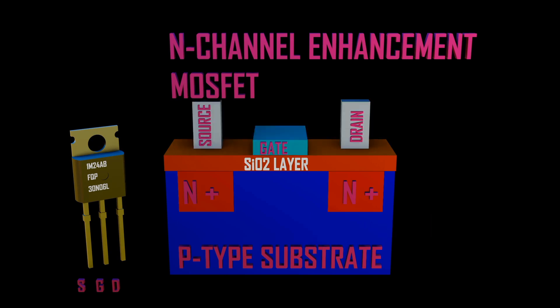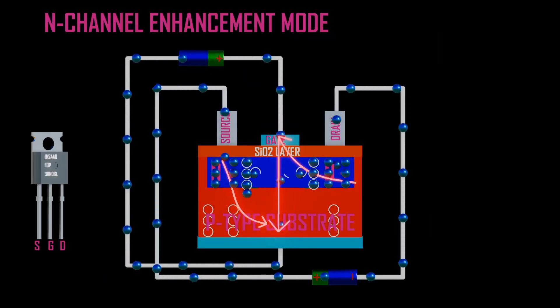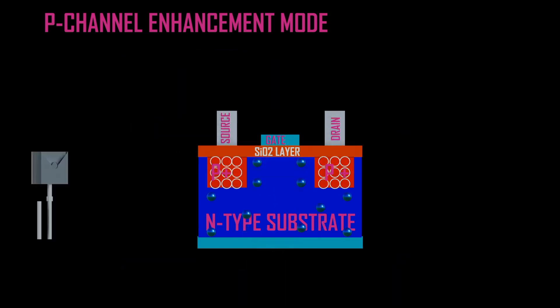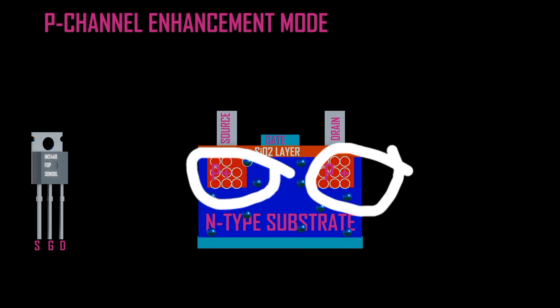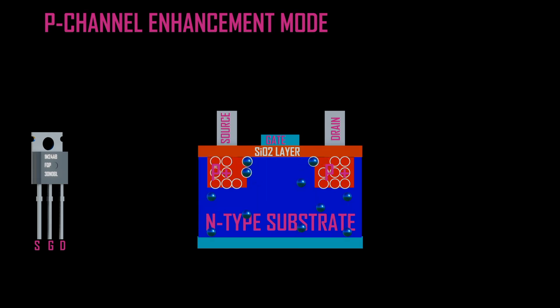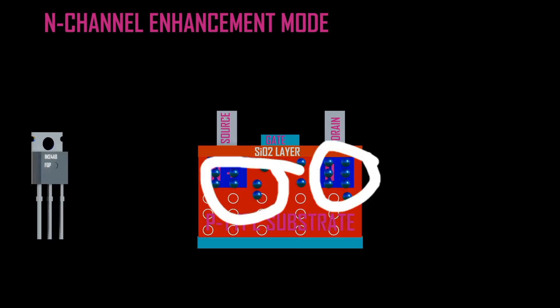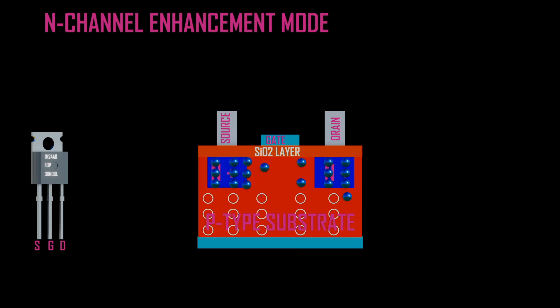MOSFET P and N channels can either be in enhancement mode or depletion mode. In P-channel, holes are majority carriers which allows for conduction, while in N-channel, electrons are majority carriers which allows for conduction across the channel.